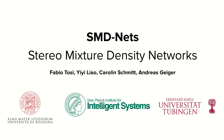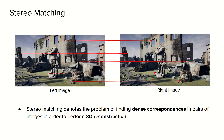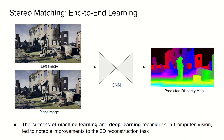Hi, I am Fabio from the University of Bologna and in this video I will be talking about SMDNets, stereo mixture density networks, a joint work with Yi Liao, Caroline Schmidt, and Andreas Geiger. In this talk we are going to focus on the stereo matching problem, a long-standing and active research topic in computer vision. The main goal of stereo matching is to recover dense correspondences between image pairs by estimating the disparity between matching pixels, required to infer depth through triangulation. Nowadays, deep learning architectures based on convolutional neural networks have outperformed traditional methods by a large margin in terms of accuracy on standard benchmarks.